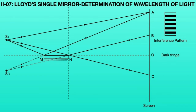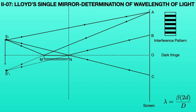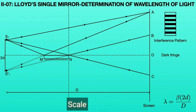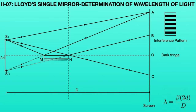We can measure the wavelength of the monochromatic source using the formula: lambda is equal to beta times 2d divided by capital D. This same formula is also used in Fresnel's biprism. Here, 2d represents the distance between S1 and S1 dash — that is, the distance between the real source and the virtual source. The distance between the principal axis and the light source gives the value of d, so we can calculate 2d from that. Capital D is the distance between the source and the screen, measured from the scale. Beta is the fringe width, measured using a microscope. Hence, the wavelength lambda equals beta times 2d divided by capital D.